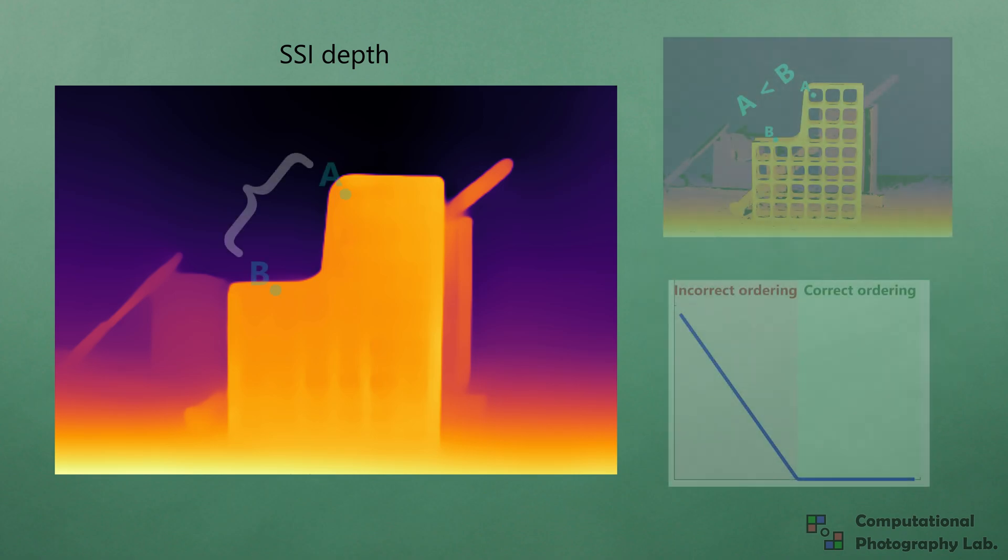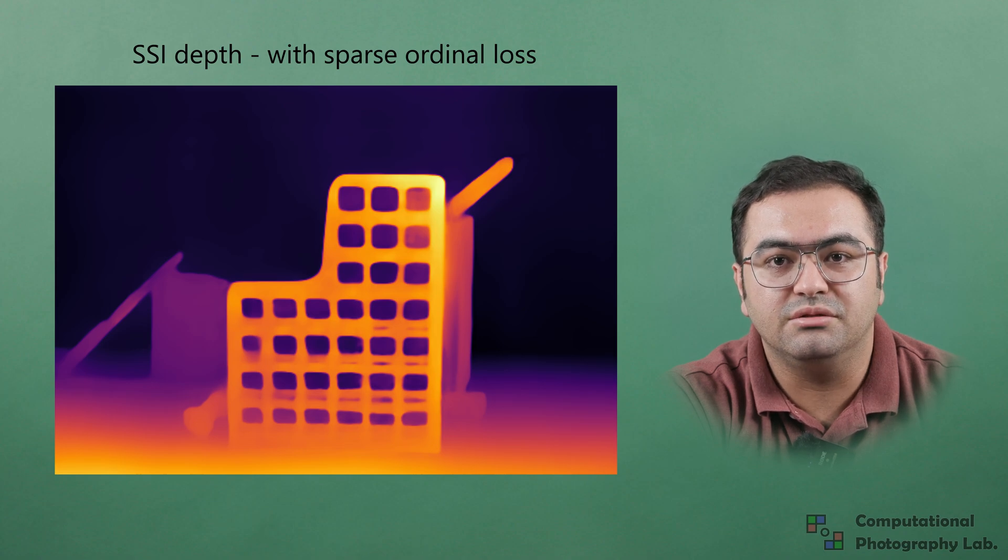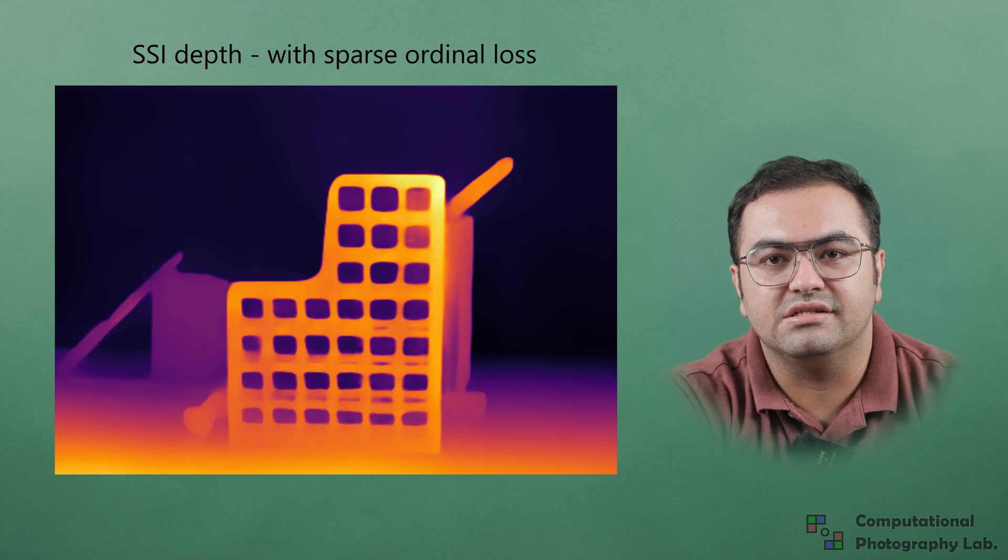Our ordinal loss penalizes incorrect depth ordering of randomly selected pixel pairs. Adding our ordinal loss leads to sharper results with more accurate depth discontinuities.